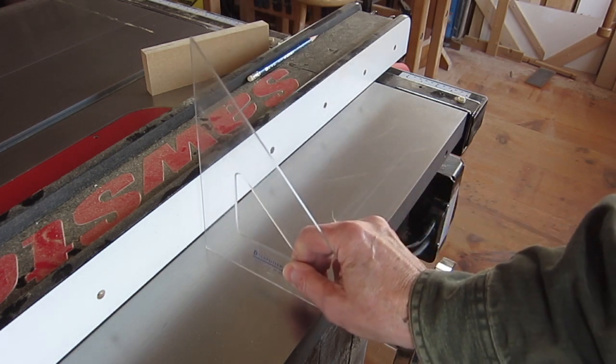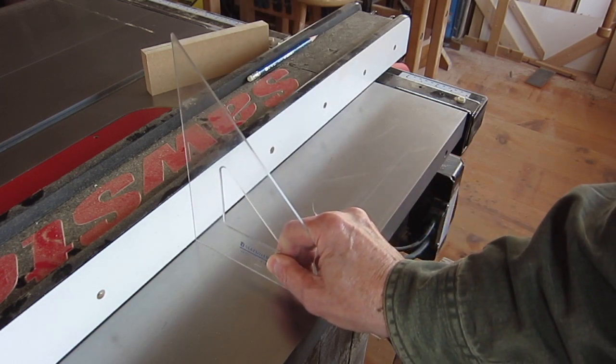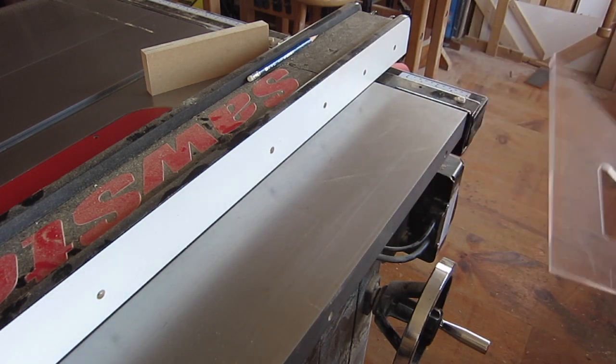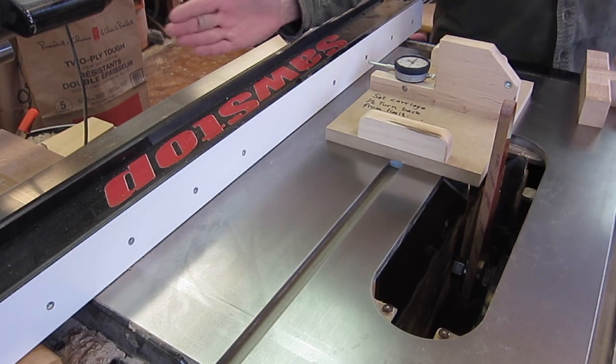Before aligning the fence, check to make sure the face of it is square with the table. And if not, then adjust the fence. The next step is to align the fence.